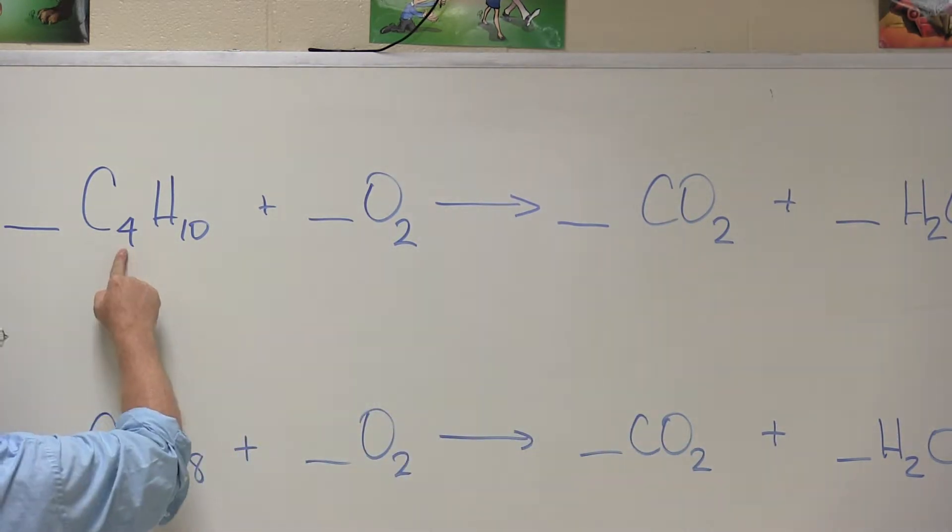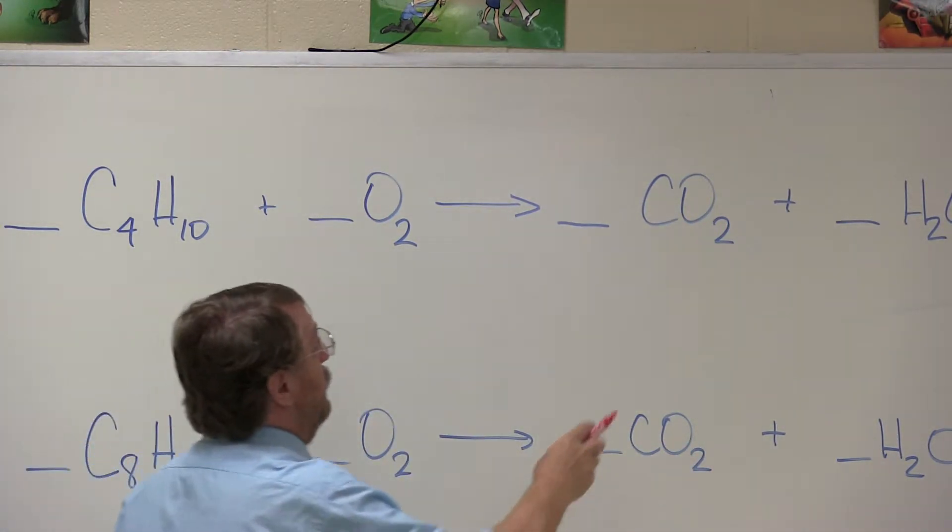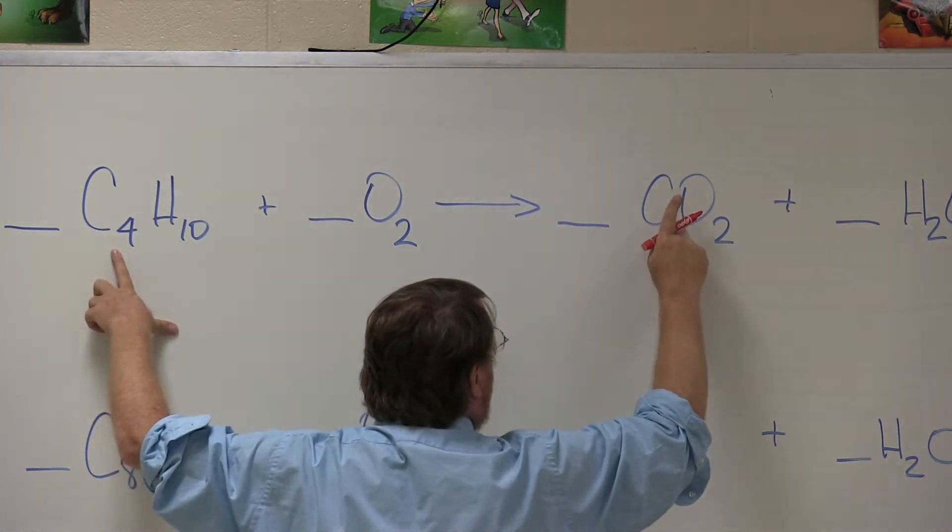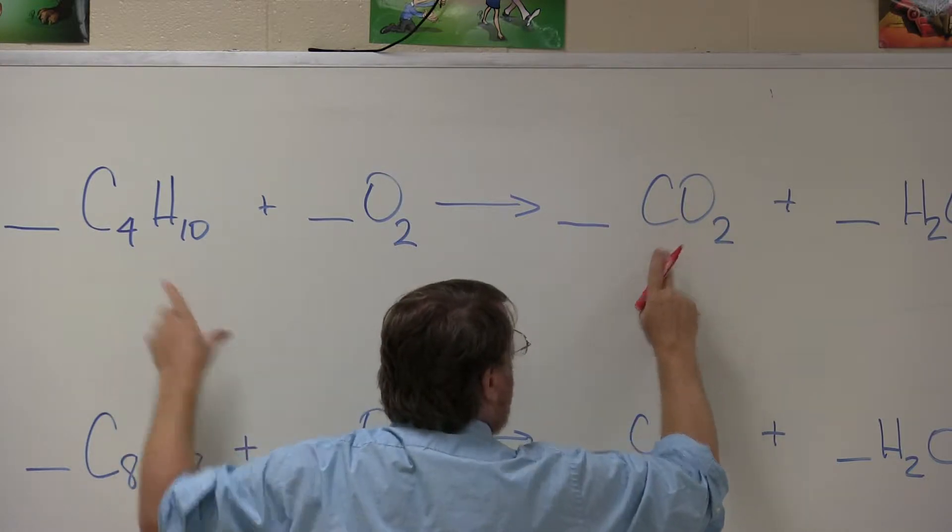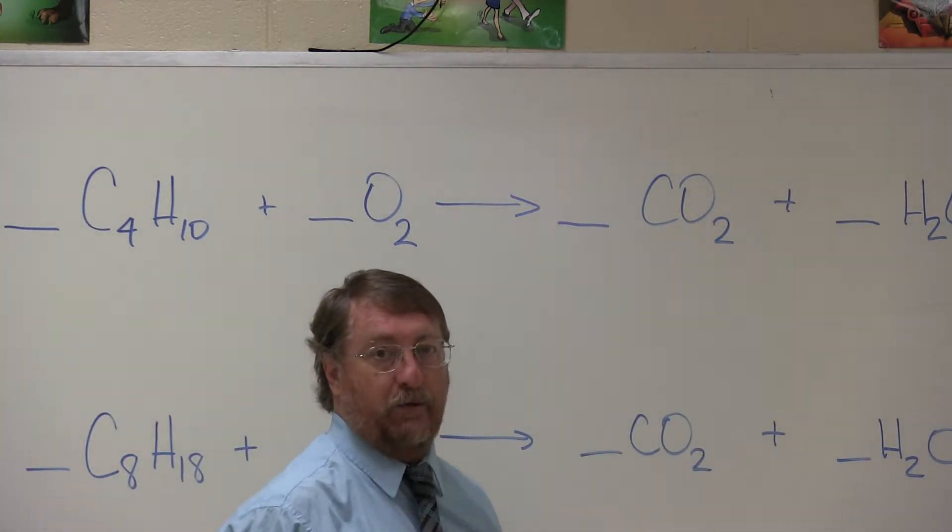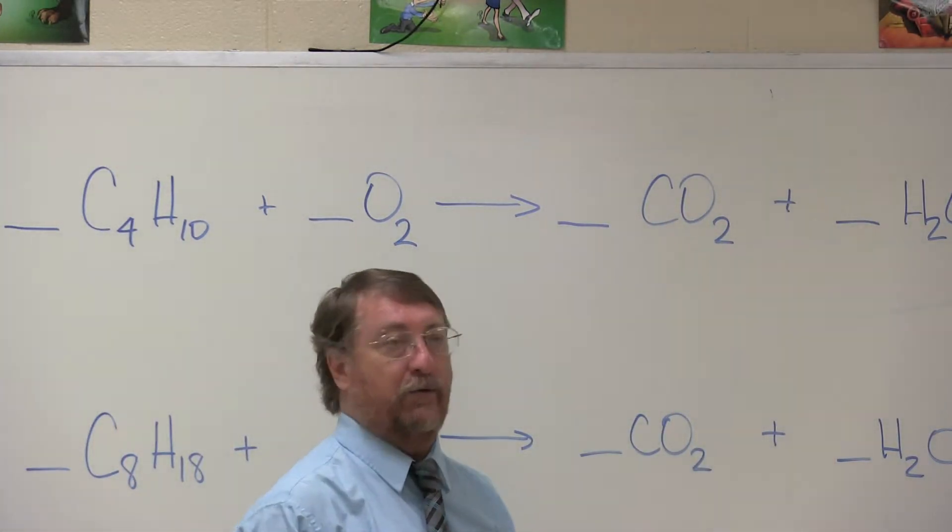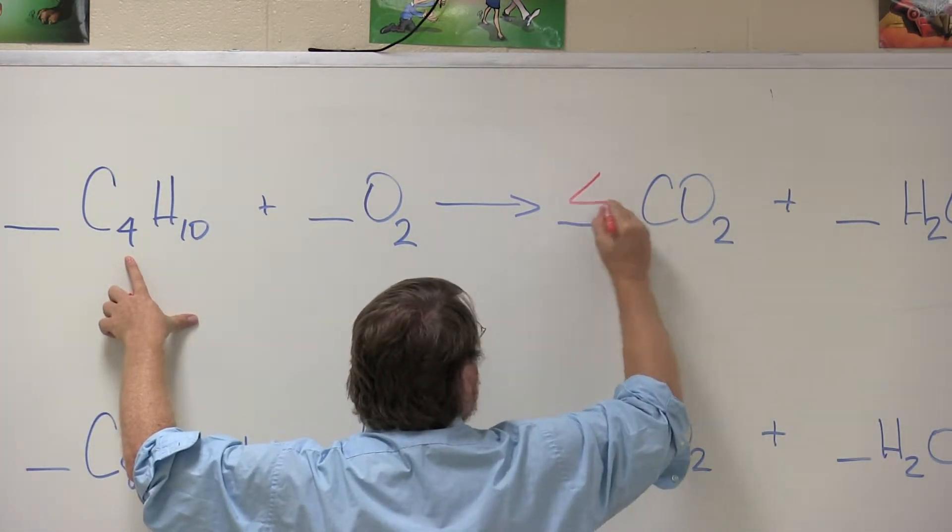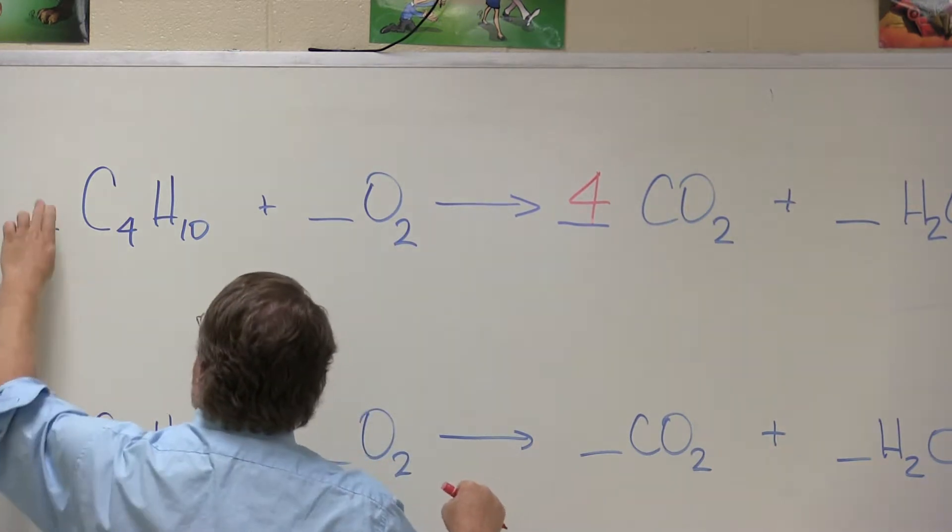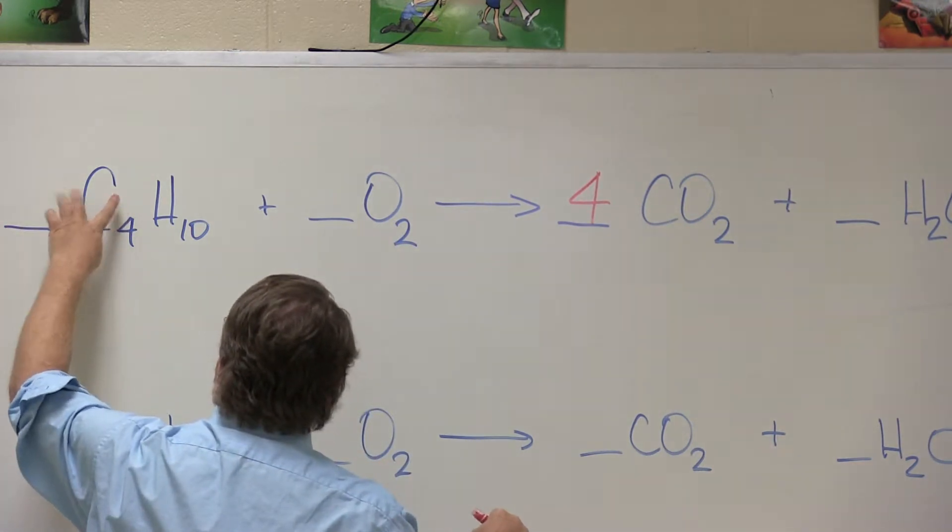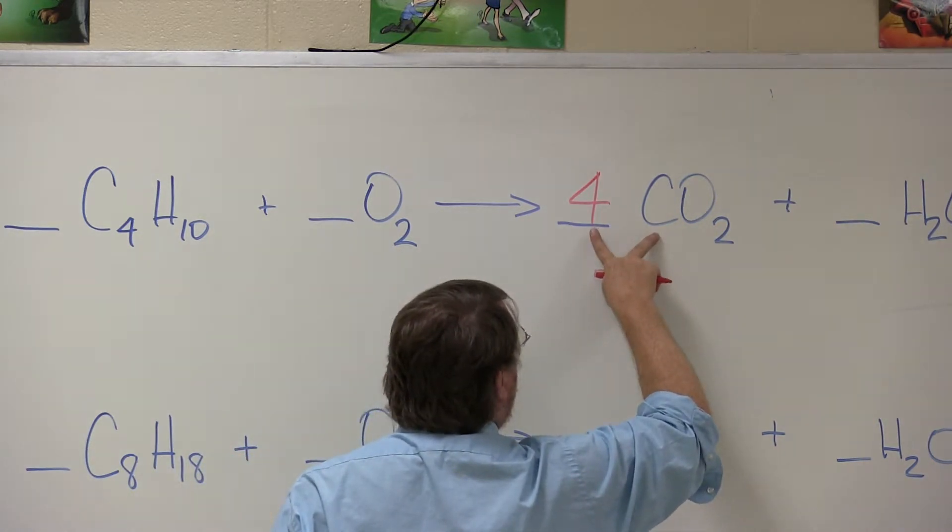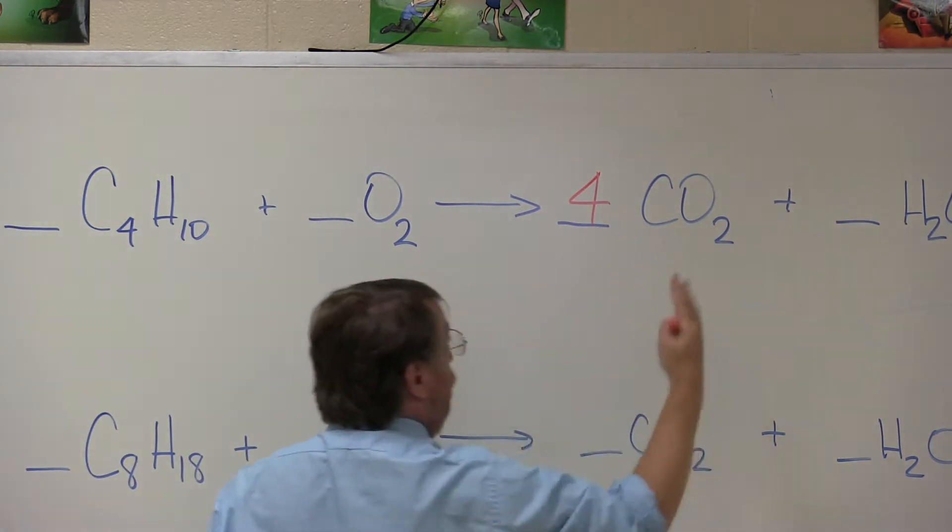So here we have carbon. We have four carbons. So we go over here, we only have one carbon. That's not balanced. So I'm never going to change the subscript. Change the subscript changes the molecule. Carbon dioxide is CO2. So to create four carbons, I'm going to have four molecules of carbon dioxide. Now I have one molecule, butane, that's four carbons, and four molecules of carbon dioxide, that's also four carbons. It's just broke off.